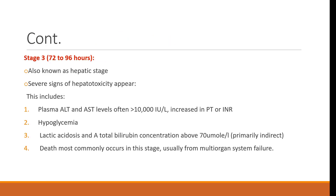Stage 3 — from 72 to 96 hours: This stage is known as the hepatic stage, as hepatic damage occurs here. Severe signs of hepatotoxicity include plasma ALT and AST levels often above 10,000 international units per liter, increased prothrombin time or INR, hypoglycemia, lactic acidosis, and total bilirubin concentration above 70 micromoles per liter. Death most commonly occurs in this stage, usually from multi-organ system failure.